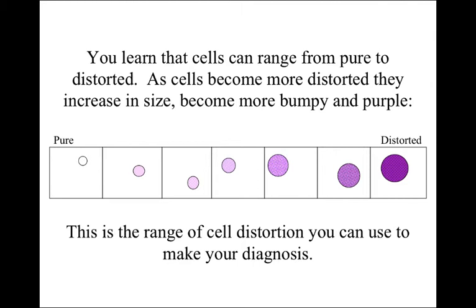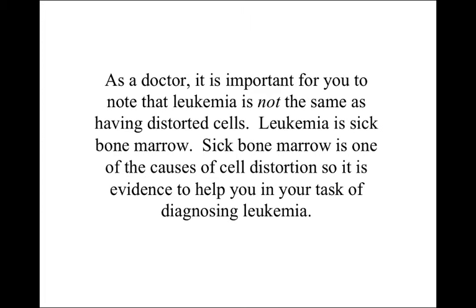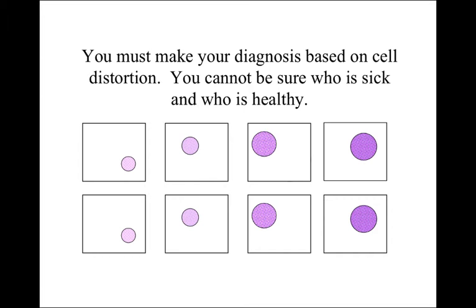Cells can range from pure to distorted. As cells become more distorted, they increase in size, become more bumpy and purple. This is a distorted cell, and this is a pure cell. This is the range of cell distortion you can use to make your diagnosis, and this is the only evidence you have from the patient, but you have to diagnose them as healthy or sick. As a doctor, it is important to note that leukemia is not the same as having distorted cells — leukemia is sick bone marrow. Sick bone marrow is one of the causes of cell distortion, so it is evidence to help you in your task of diagnosing leukemia.